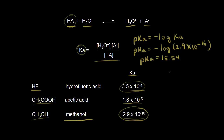So the pKa of methanol is 15.54. We could write in a pKa column right here. For methanol it's 15.54. If you did the same calculation for acetic acid, you would get 4.74. And if you did this for hydrofluoric acid, you would get 3.46.